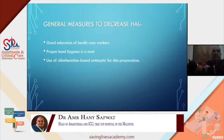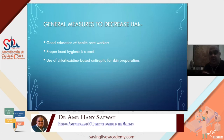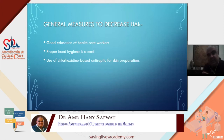General measures to decrease hospital acquired infections: good education of healthcare workers, proper hand hygiene is a must before performing any procedure and any time you touch the patient. The rate of following hand hygiene rules is not very high, and this is a big problem — hand hygiene is the proven method of decreasing all hospital acquired infections. Use of chlorhexidine-based antiseptic for skin preparation is also essential.